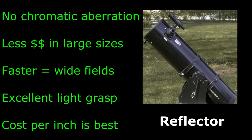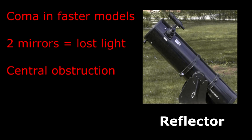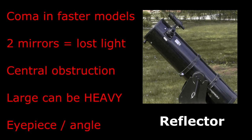But they also have their drawbacks. The optical aberration coma occurs in faster models, unless specialized eyepieces or correctors are used. Light loss due to multiple mirrors is greater than refractors. Central obstruction due to secondary mirror can cause diffraction and contrast loss. Larger models can be bulky and heavy, and the eyepiece can sometimes be in awkward positions.